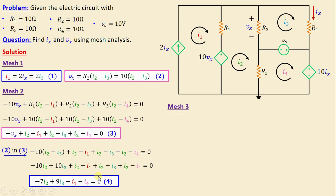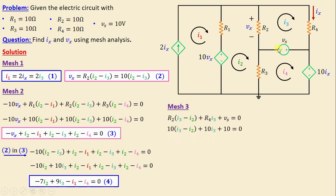Moving on to mesh 3, applying Kirchhoff's voltage law we write: R2(i3 minus i1) plus R4·i3 plus Vs equals 0. Replacing the resistors and voltage source with their numerical values, we obtain finally: 2i3 minus i2 plus 1 equals 0.